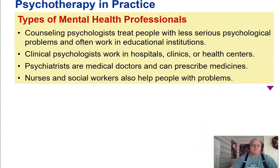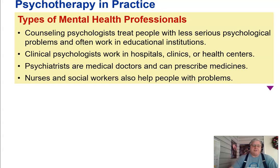There are two main types of mental health professionals. Counseling psychologists treat people with less serious psychological problems and often work in educational institutions. Clinical psychologists work in hospitals, clinics, or health centers. Psychiatrists are medical doctors and can prescribe medicines. Psychiatric nurses and social workers also help people with problems.